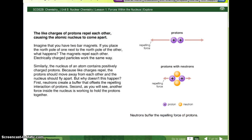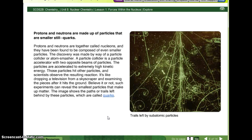Protons and neutrons are made up of particles that are smaller still. Quarks. And this picture is trails left by subatomic particles. So, they did experiments, and these are the trails that the subatomic particles left.